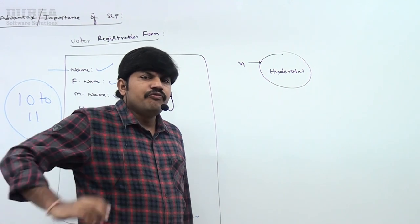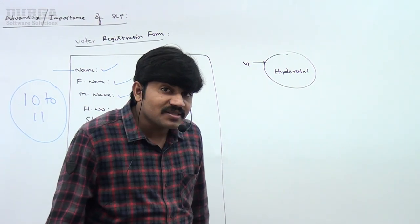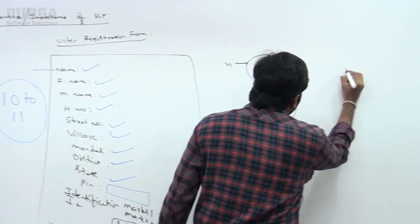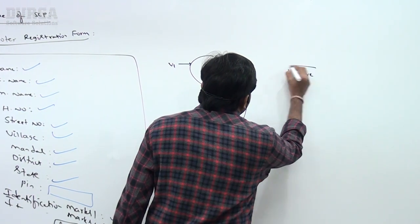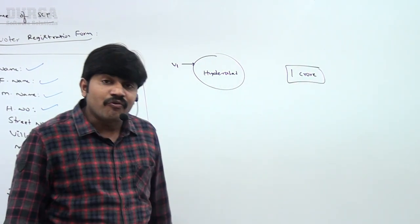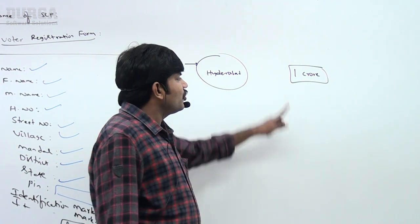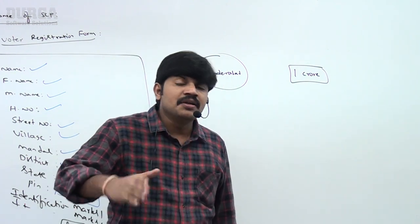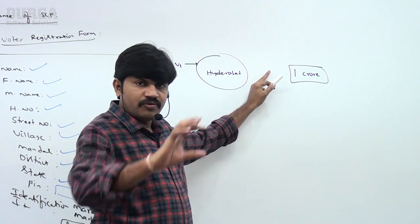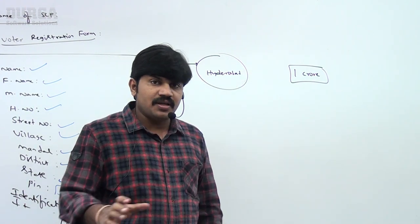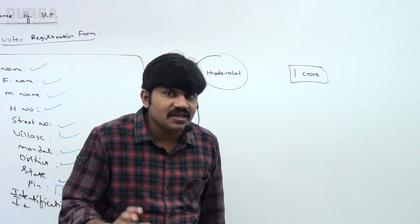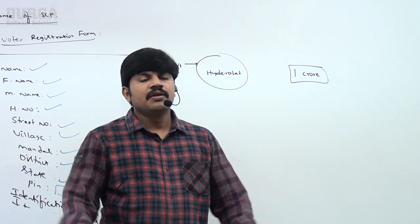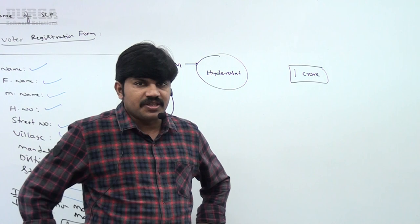Now my question is: within Hyderabad, how many voters are there? Almost around 1 crore voters are there within Hyderabad. Now, if I create a separate Hyderabad object for every voter — Water 1 city name Hyderabad one object, Water 2 city name Hyderabad another object, Water 3 city name Hyderabad, and so on — then 1 crore String objects would be required to create. Unnecessarily, performance is going to be down and there will be a memory problem.